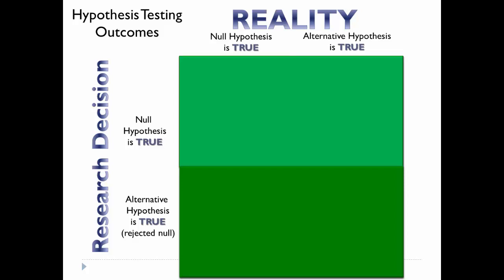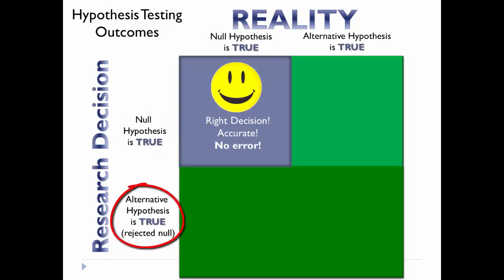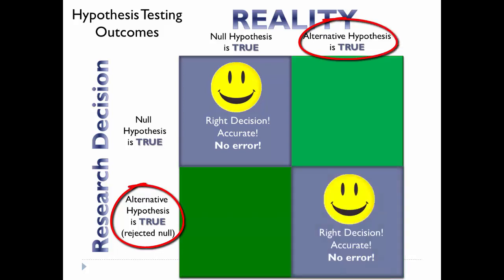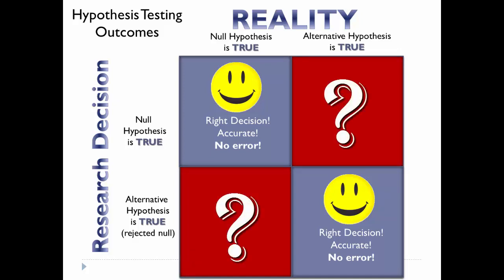Now compare the research decisions with reality. If we accepted the null and in reality the null hypothesis is true, we made the right decision — no error. Same thing if we rejected the null and accepted the alternative hypothesis, and the alternative was indeed the right one — that would also be the right decision, no error. However, for the other two decisions, we would be drawing the wrong conclusions, meaning there would be error. So the question is, what type of error?